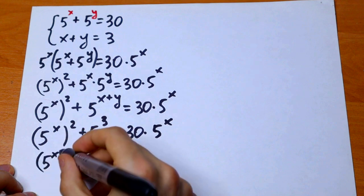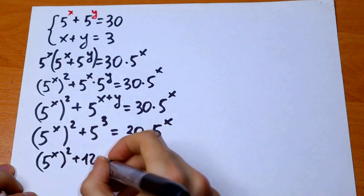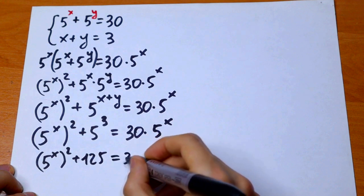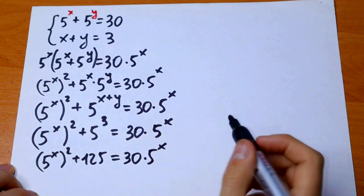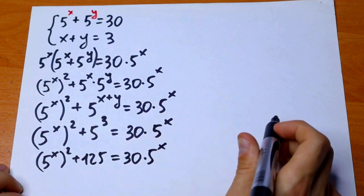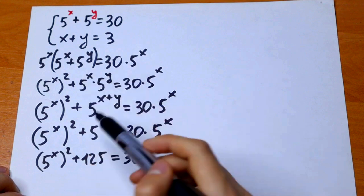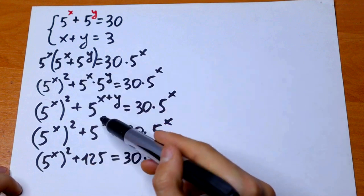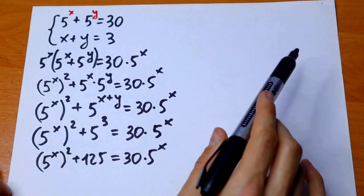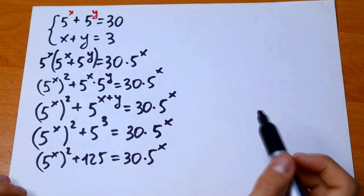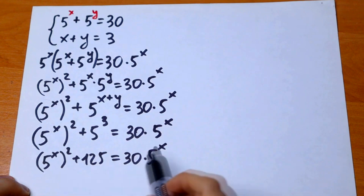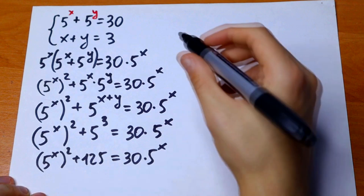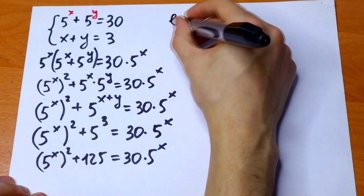We can write 5 to the power x squared plus 125 equals 30 times 5 to the power x — just a little simplification, replacing 5 cubed with 125. Now we have 5 to the power x appearing on both sides, so we can use a substitution.